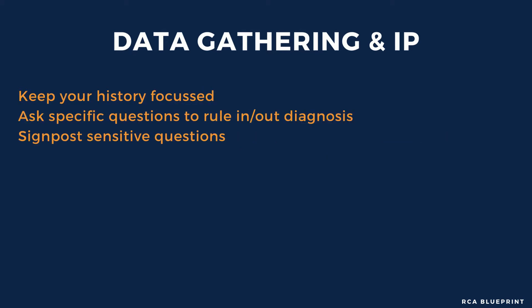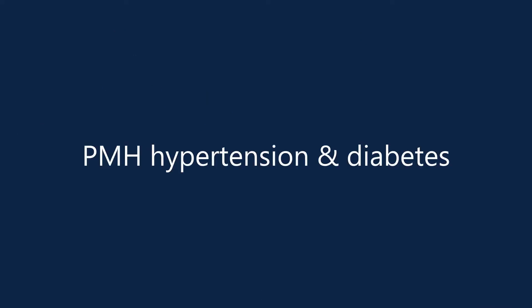Ask about associated symptoms such as numbness, slurred speech, visual loss, the duration of the symptom, and whether the symptoms have completely resolved within 24 hours. The history needs to be focused, so ask pertinent questions. You may want to ask red flag questions such as whether there's been any confusion, loss of consciousness, seizures, dizziness, headache, or palpitations.